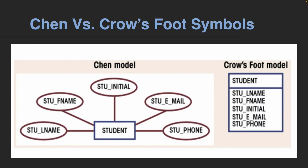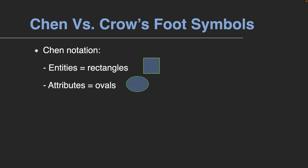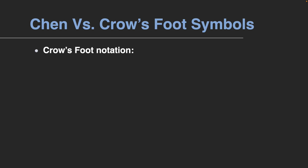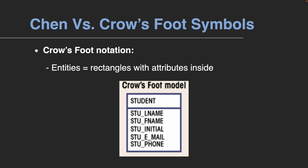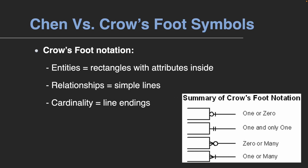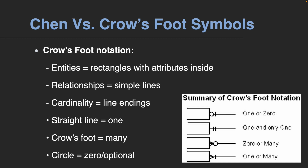Now, before we wrap up, let's take a look at the symbols used for both notations. In Chen notation, entities are rectangles, attributes are ovals, and relationships are lines with diamonds. Cardinality is shown with numbers or words near the lines. In Crow's Foot notation, entities are rectangles that contain both the entity name and its attributes. Relationships are simple lines without diamonds. Cardinality is shown with line endings: a straight line means one, a crow's foot symbol means many, and a circle means zero or optional. Chen notation gives a detailed visual breakdown while Crow's Foot notation is cleaner and more compact. That's why Crow's Foot is more commonly used in practice.